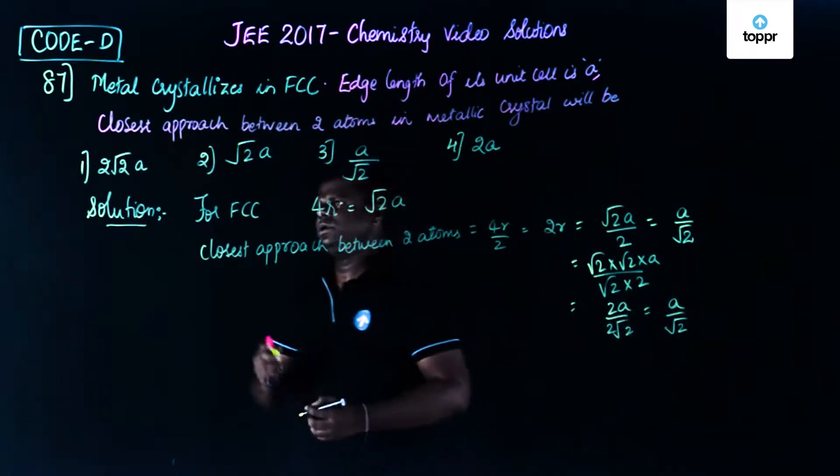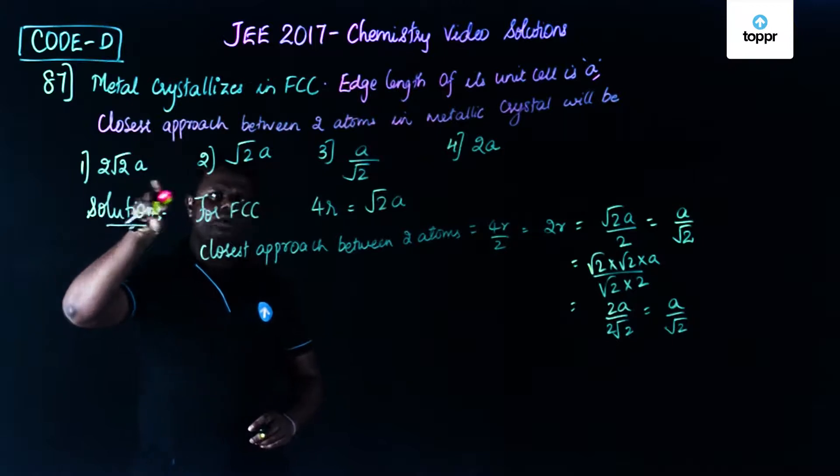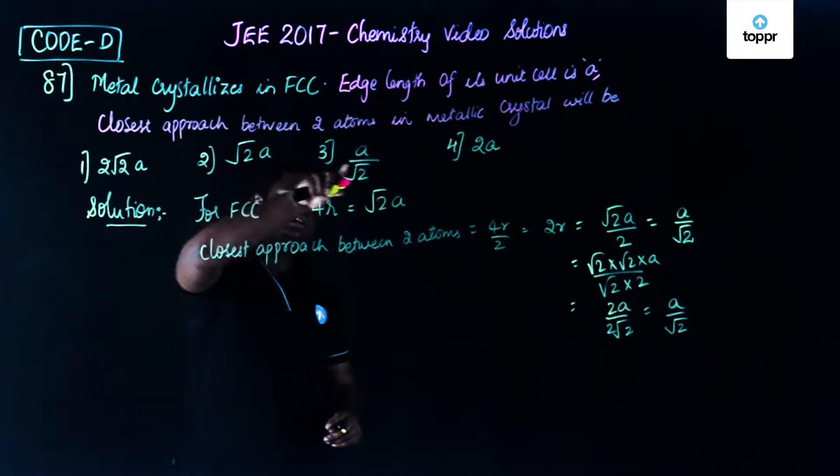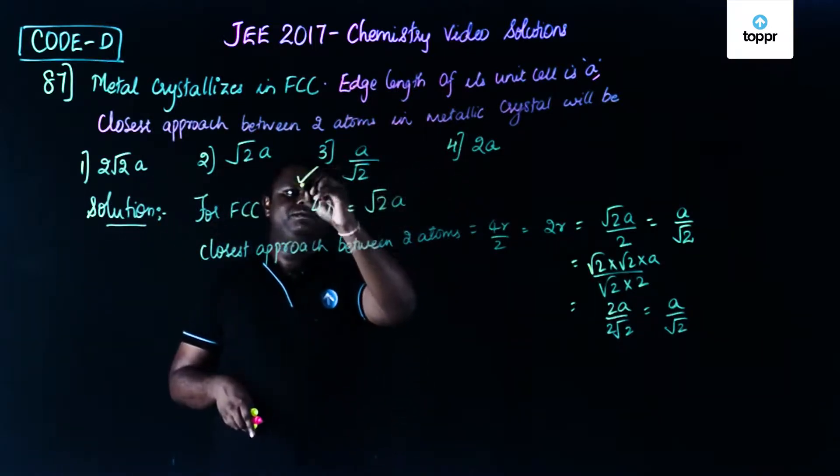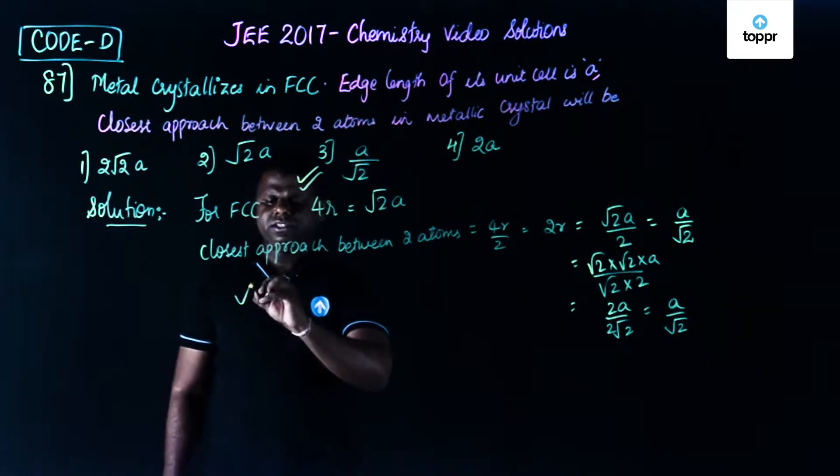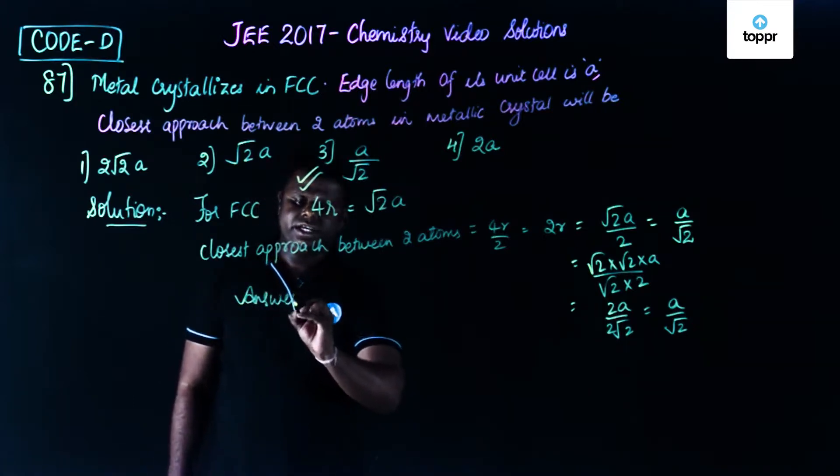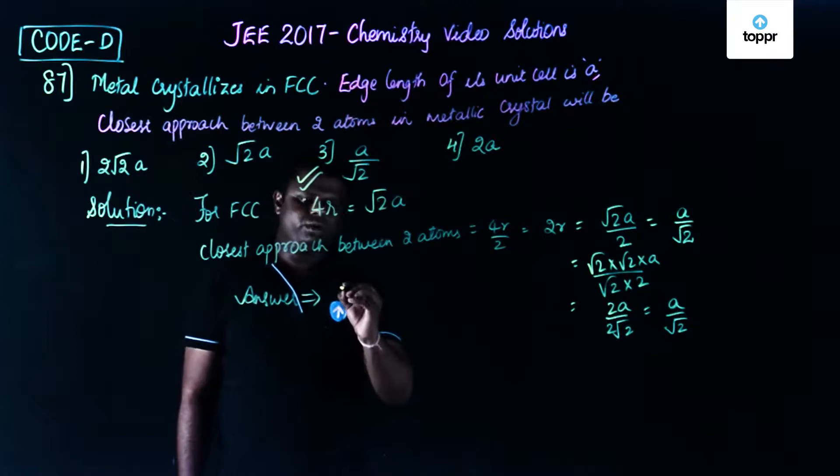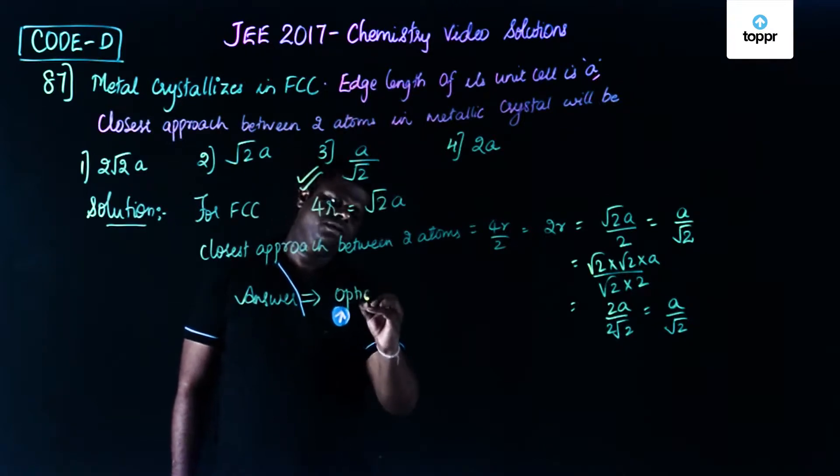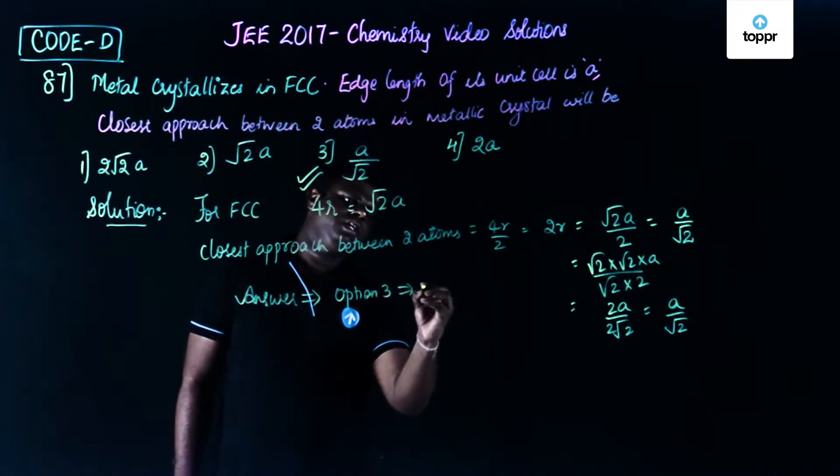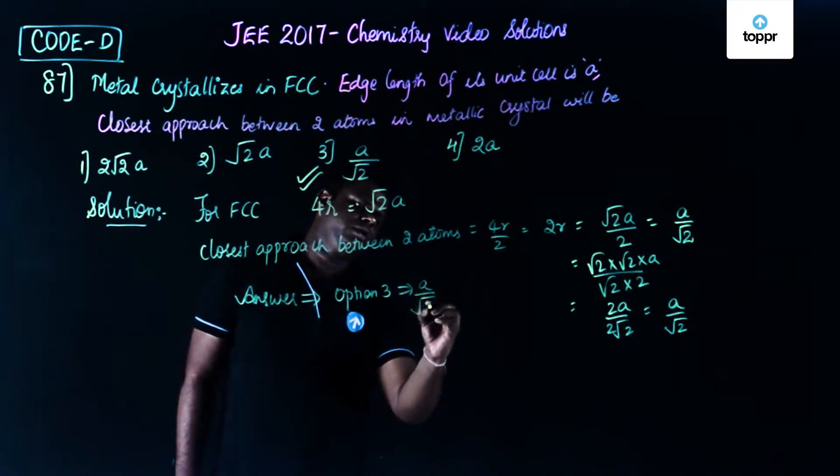Now let's see the options. It's not 2 root 2a, it's not root 2a, it's not 2a. The answer is a by root 2. So the correct answer for this question is option 3, which is a by root 2.